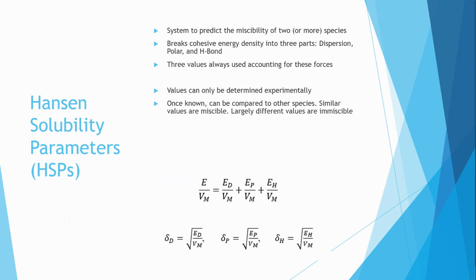So what are Hansen solubility parameters? Well, put quite simply, it is a quantitative system created by Hansen that can predict the miscibility of two or more species. This system breaks the cohesive energy density into three parts, accounting for dispersive, polar, and H-bond forces.